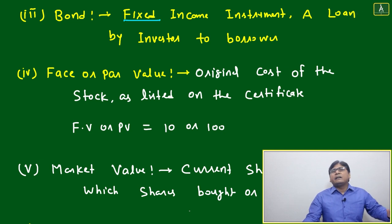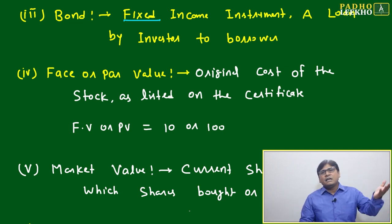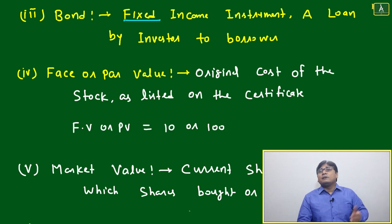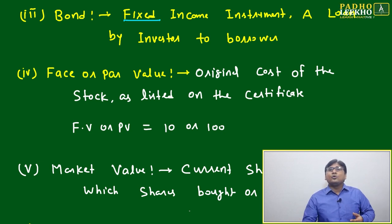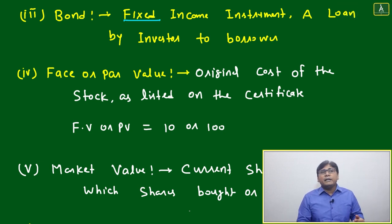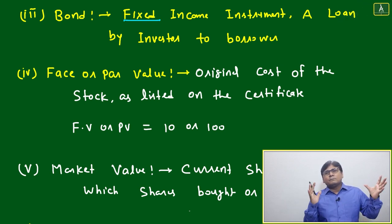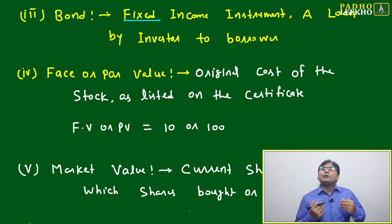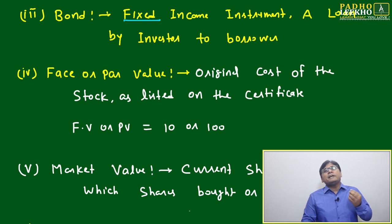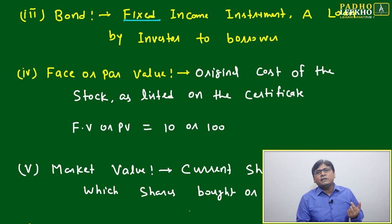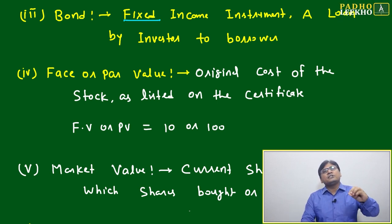When a company wants money, there are two or three options. Either they can go for equity — they can dilute equity — or they can put capital in the share market, their shares will be sold, and the company will get the money. Another option: some companies don't want to dilute equity and don't want to go to the share market either. So another way is to ask the public to give money as a loan.